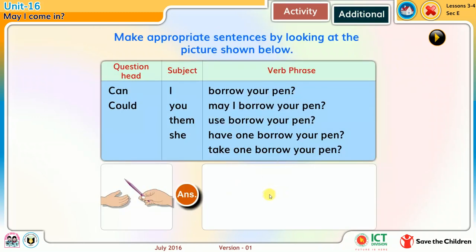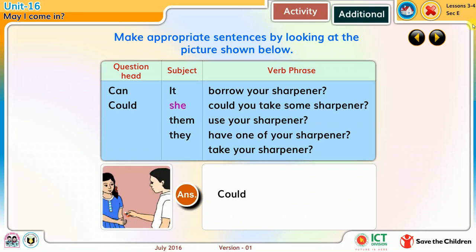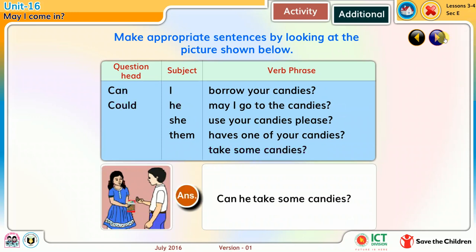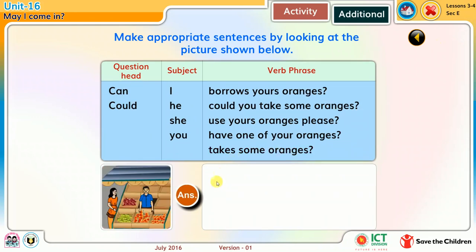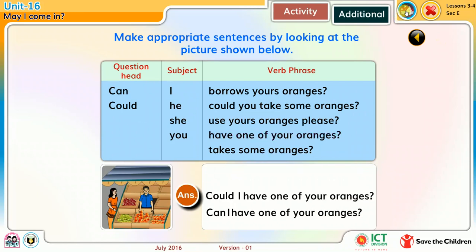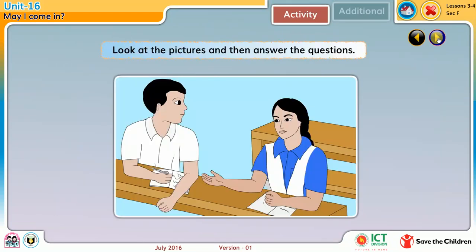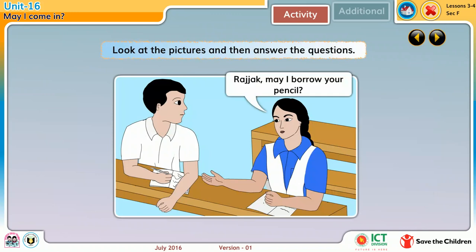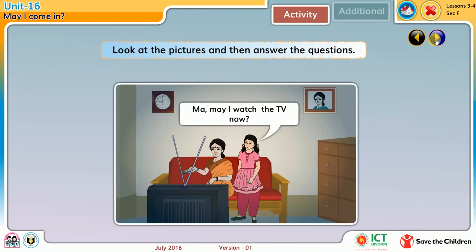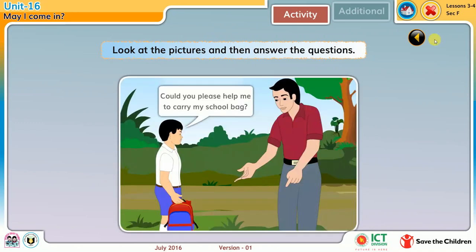Make appropriate sentences by looking at the picture shown below. Read and act: One, you need a pencil to draw a picture but you don't have one — ask a friend. Look at the pictures and then answer the questions. May I borrow your pencil? May I watch the TV now? Could you please help me to do my homework? Could you please help me to carry my school bag?